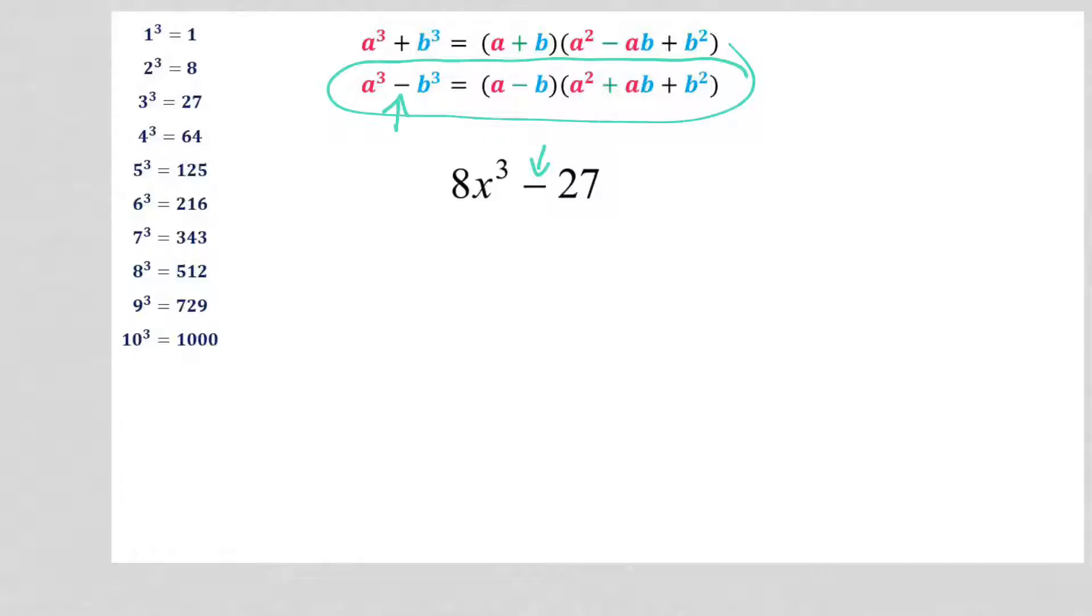I need to figure out what my a terms are going to be. So a is going to equal the cubed root of 8x cubed. I know the cube root of 8 is 2, and the cube root of x cubed is x. And my b term is going to be the cubed root of 27, which I know is 3.